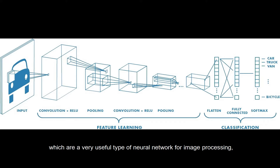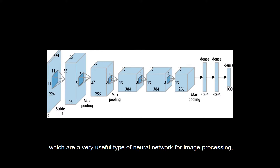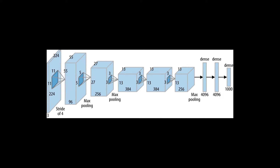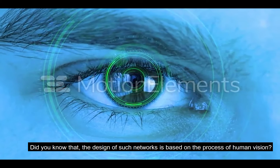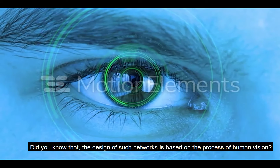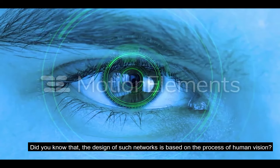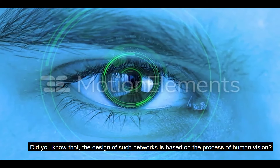To achieve this, we made use of artificial intelligence — specifically convolutional neural networks, which are a very useful type of neural network for image processing.